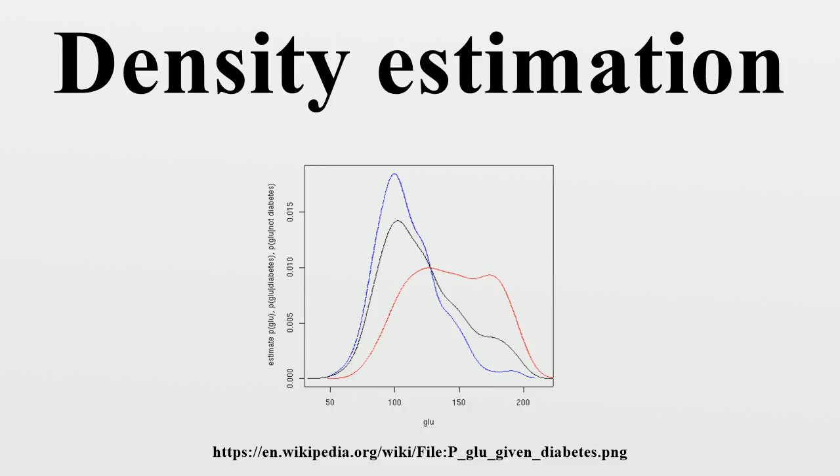In this example, we construct three density estimates for glucose: one conditional on the presence of diabetes, the second conditional on the absence of diabetes, and the third not conditional on diabetes.